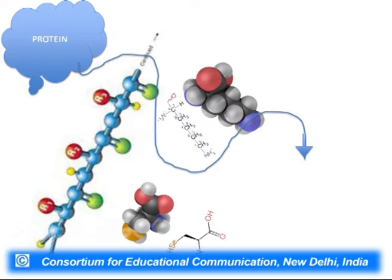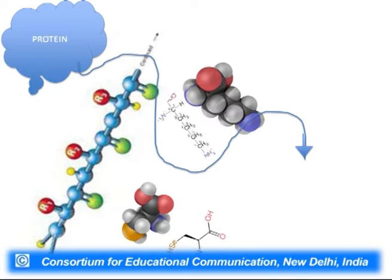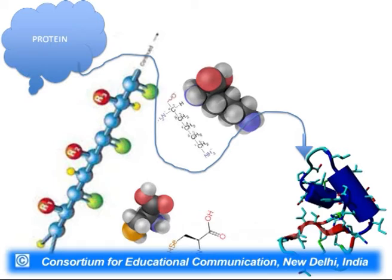We want to understand the structure of the protein by taking a microscopic view into it. As shown here, a protein is a big globule of molecules — how are they arranged? The primary structure is the strings on a bead. These pearls are not just round structures; they have characteristic R groups of various sizes, and these R groups lend specific properties to the protein, which we will see in this lecture.